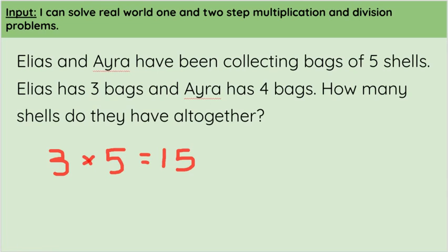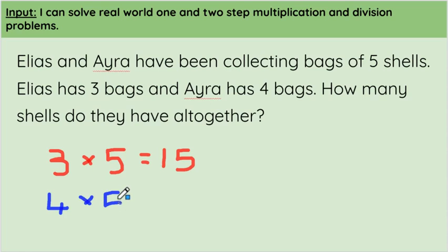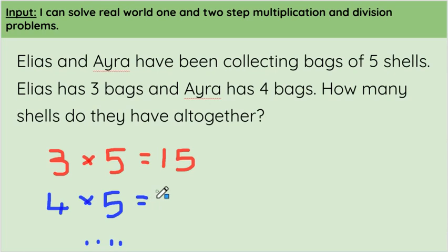Now we need to figure out how many shells Ira has. She has four bags of five shells, so we're going to do four multiplied by five. Four bags of five shells — let's count in our fives again: five, ten, fifteen, twenty. So four multiplied by five equals twenty.